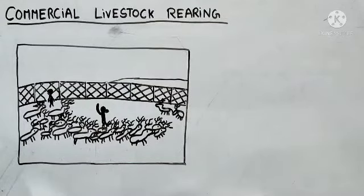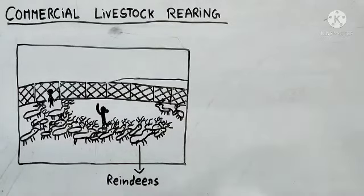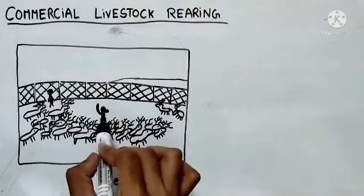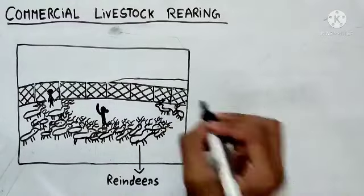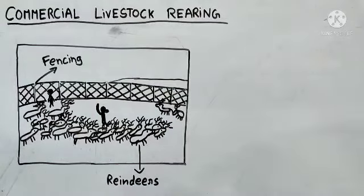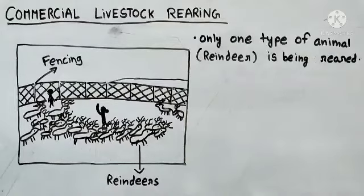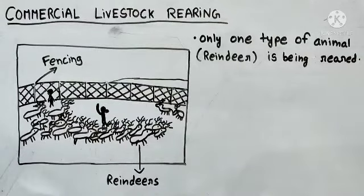Ab hum jaldi se is image ko samajh lete hain ki yeh image humein kya dikhana chahti hai. Is image mein ho rahi hai commercial livestock rearing aur ismein reindeer hi reindeer hain — aur ye log hain is ranch ke owners. Shayad ye owners inhe ek pasture se doosre pasture mein shift kar rahe hain. Jo peeche boundary hai use hum kehte hain fencing. Commercial livestock rearing mein sirf ek type ke animal ko hi rear karte hain — is pasture pe tumhe reindeer hi reindeer dikhenge, matlab in pastures ke upar sirf reindeer ka hi domestication ho raha hai.